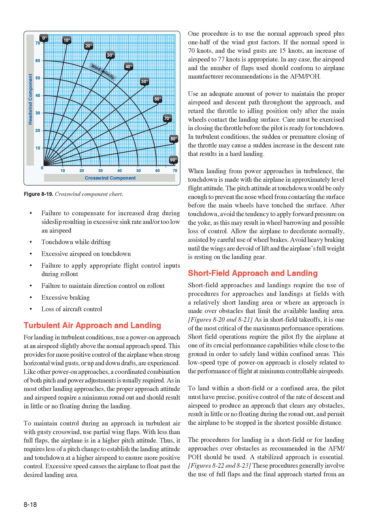Short Field Approach and Landing. Short field approaches and landings require procedures for fields with a relatively short landing area or where an approach is made over obstacles that limit the available landing area. Like short field takeoffs, this is one of the most critical of the maximum performance operations. Short field operations require the pilot to fly the airplane at one of its crucial performance capabilities while close to the ground in order to safely land within confined areas. This low-speed type of power-on approach is closely related to the performance of flight at minimum controllable airspeeds.